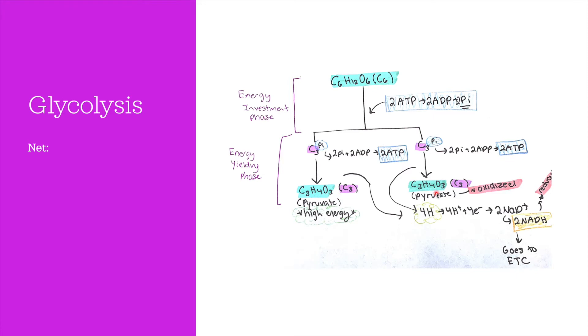These molecules are high energy. In the process, four hydrogen atoms are lost. The electrons lost by the pyruvate are picked up by NAD+, along with four protons. And as a result, two NADH molecules are produced.